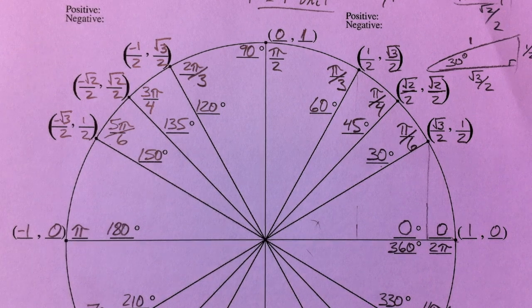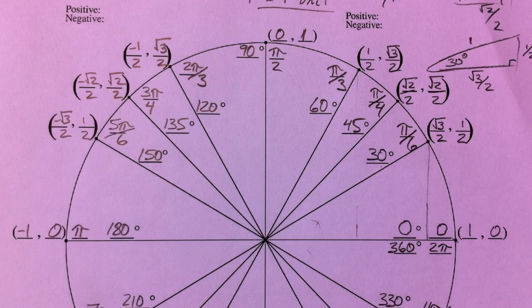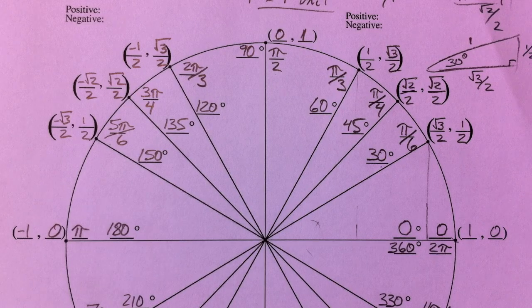One of the hardest things year after year I find is starting to think in radians, because it's a lot easier rather than using pi over 180 or 180 over pi to convert back and forth between them.